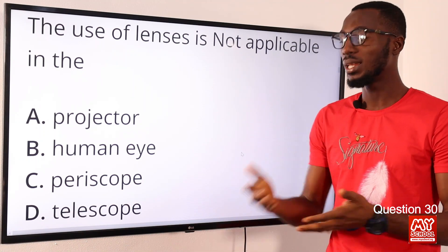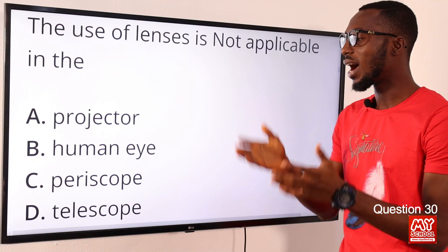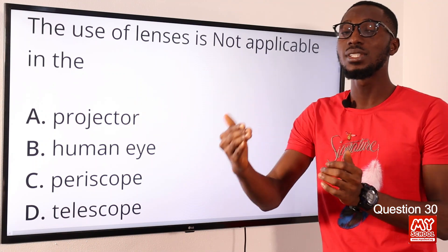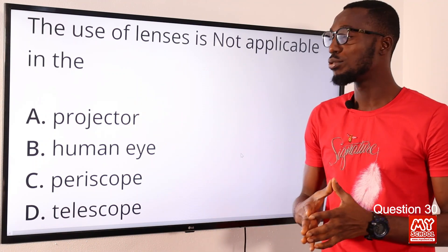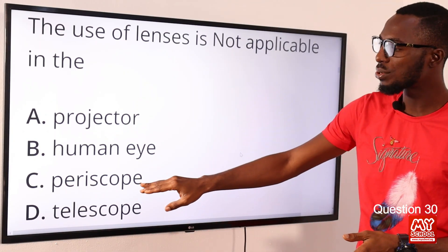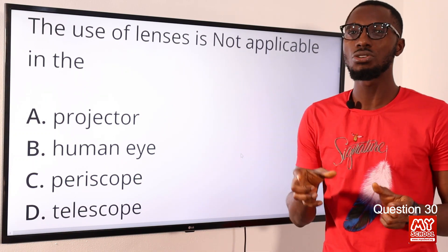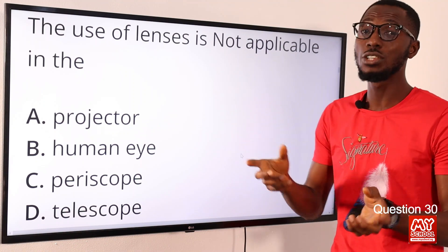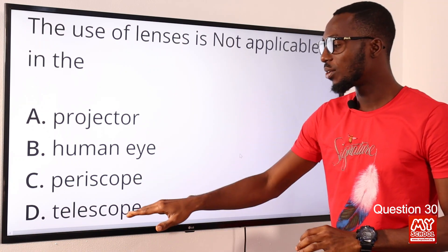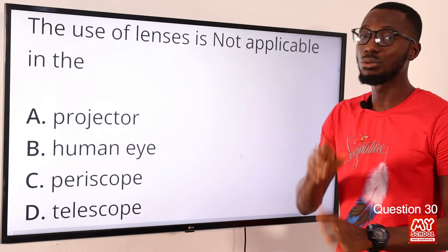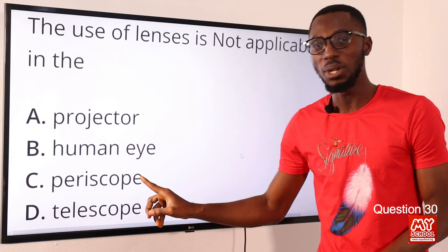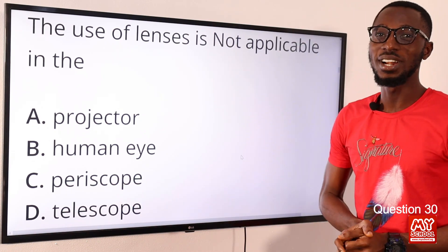A long-sighted person cannot see a near object, and you correct that with a convergent lens. In a periscope, however, you see the practical application of reflection by plane mirrors — not lenses. An astronomical telescope also uses two converging lenses. So: lens, lens, lens, plane mirror. Option C — the periscope — is the correct option.